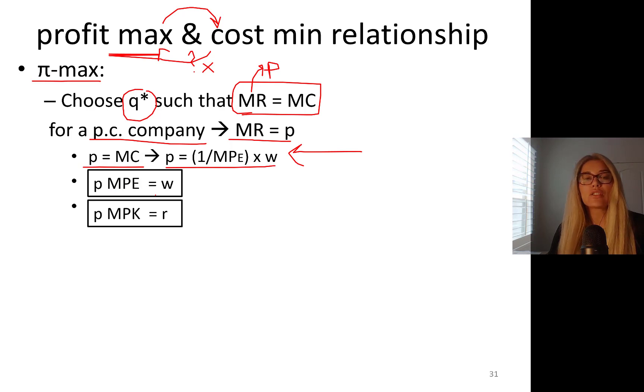This is a long run profit maximization: value marginal product of capital equals the rental rate. These imply cost minimization, and we can divide the left hand side with the right hand side.